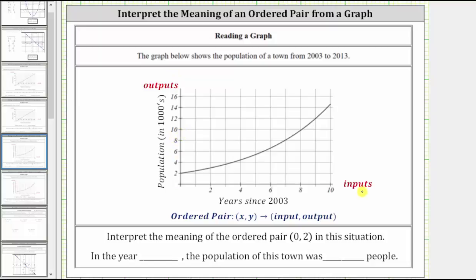Notice for this graph, the input is the number of years since 2003, and the output is the population in thousands.